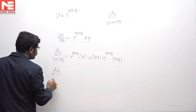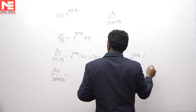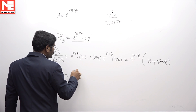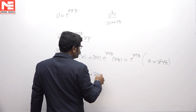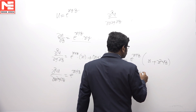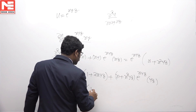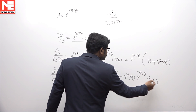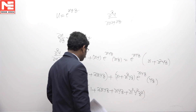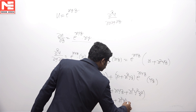Now, del square u by del x del y del z — we can write e power xyz of x plus x square yz. Now, differentiating with respect to x, we get e power xyz of 1 plus 2xyz plus x plus x square yz of e power xyz into yz. Therefore, e power xyz of 1 plus 2xyz plus xyz plus x square y square z square, that is e power xyz of 1 plus 3xyz plus x square y square z square.